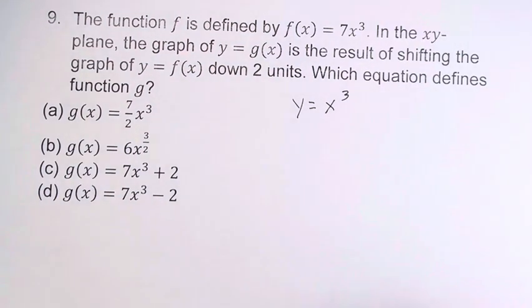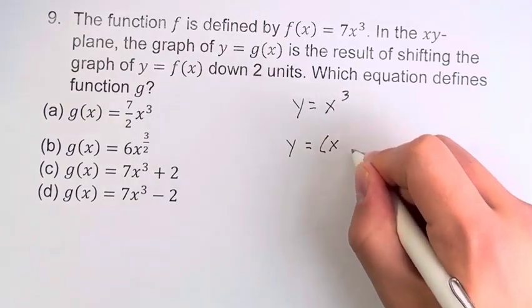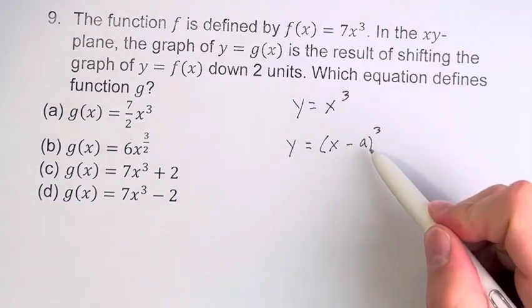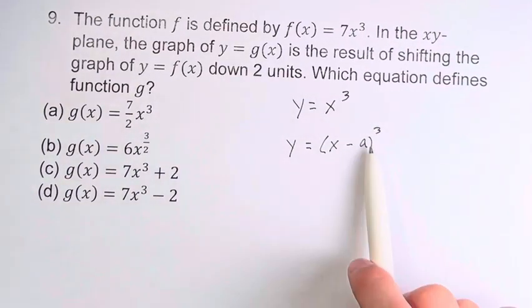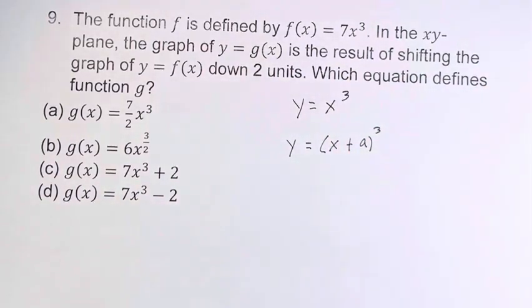There's two types of shifts you can do. We can do y is equal to x minus some value a cubed. And this is going to shift it a units to the right. Or if it's positive, it's a units to the left.